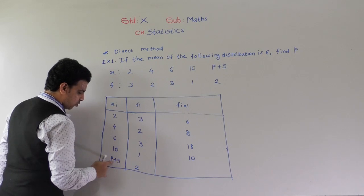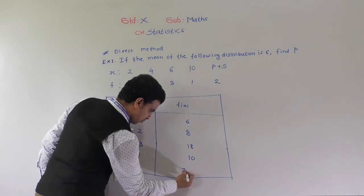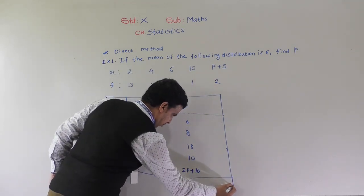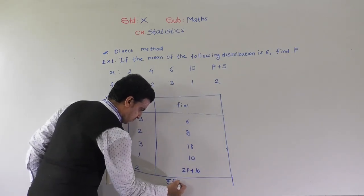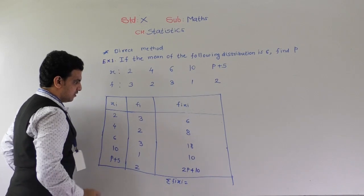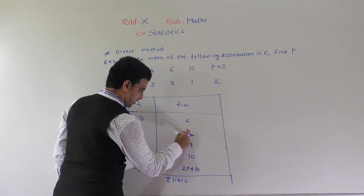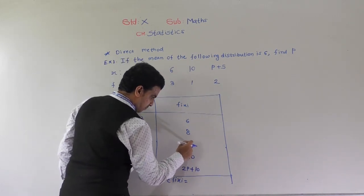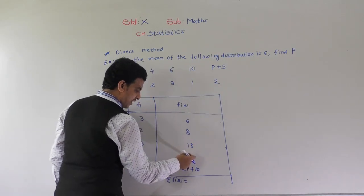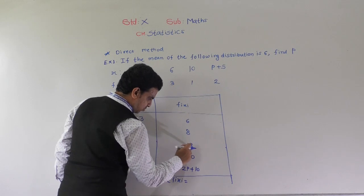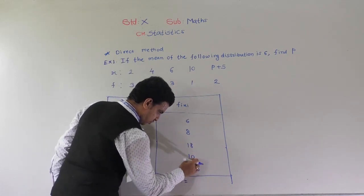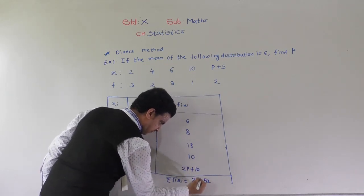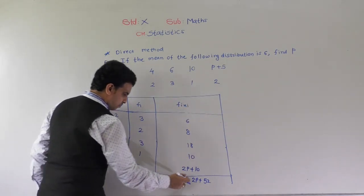So 2 is multiplied to both terms, p and 5. So 2 into p is 2p and 2 into 5 is 10, giving 2p plus 10. Now we find summation of fixi by adding all values: 6 plus 8 is 14, 14 plus 18 is 32, 32 plus 10 is 42, and 42 plus 10 is 52. So summation fixi is 2p plus 52.